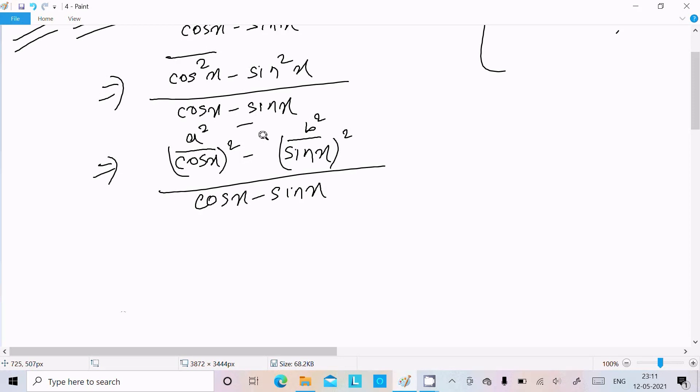So you already know a squared minus b squared, that is a plus b and a minus b. So for this one we can write cosx minus sinx times cosx plus sinx into cosx plus sinx divided by cosx minus sinx.